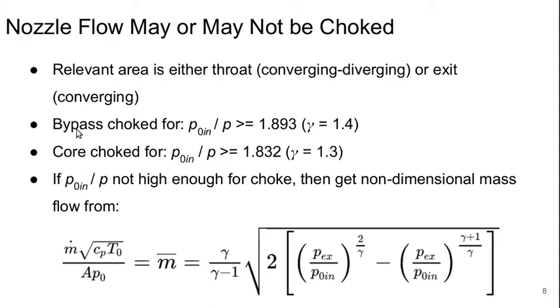If we've got a turbofan engine, then the bypass rate is choked for P9N over P of more than 1.893 with gamma equals 1.4, whereas the core gets choked for the lower value of 1.832 because of the reduced gamma of 1.3.